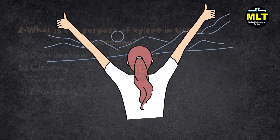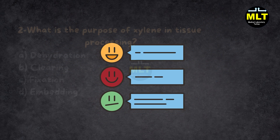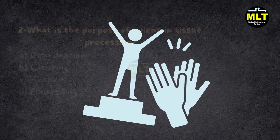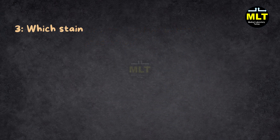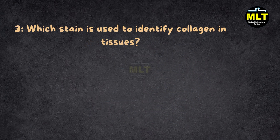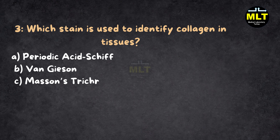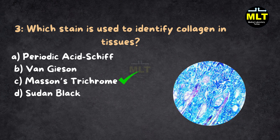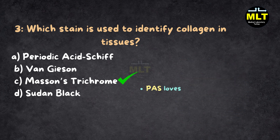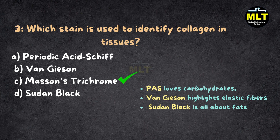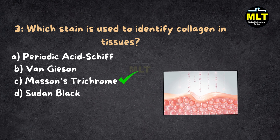If you're enjoying this MCQ or found it helpful, please drop an appreciation comment below. Question 3: Which stain is used to identify collagen in tissues? Options: A. Periodic acid-Schiff, B. Van Gieson, C. Masson's trichrome, D. Sudan Black. Correct Answer: C. Masson's trichrome. Explanation: Masson's trichrome is the artist for collagen, coloring it blue or green. PAS loves carbohydrates, Van Gieson highlights elastic fibers, and Sudan Black is all about fats. Masson's trichrome is the specialist.